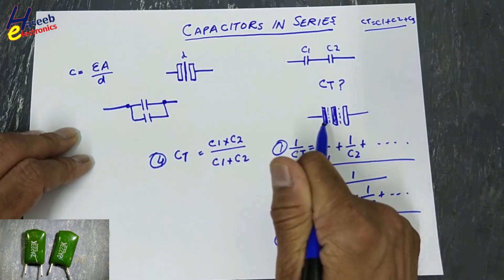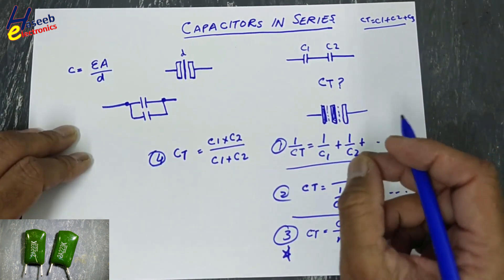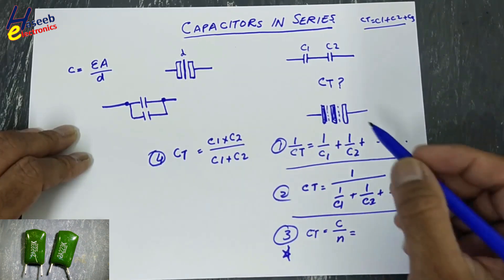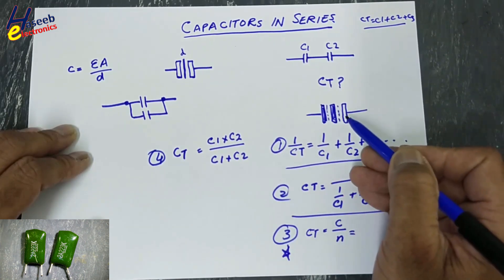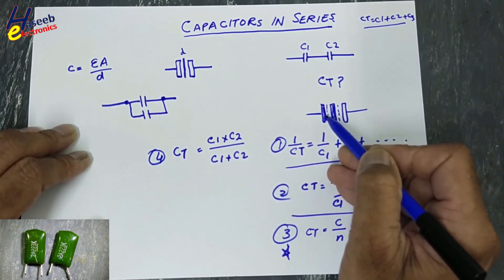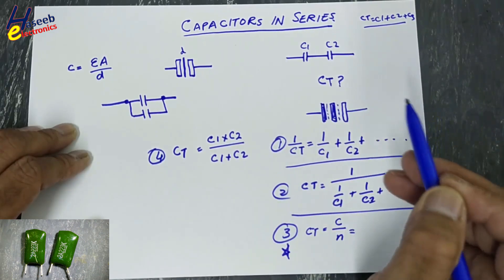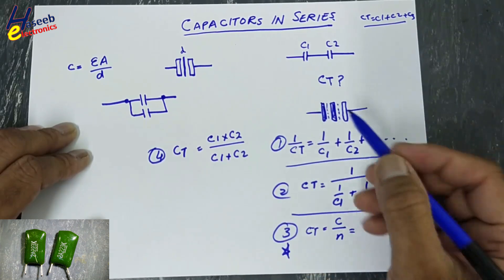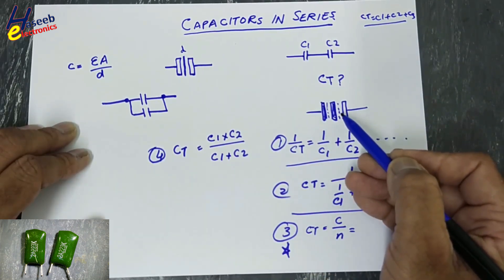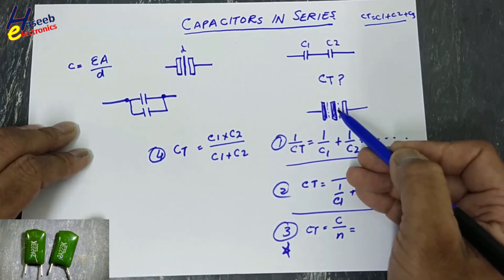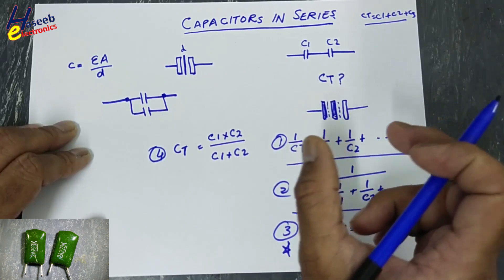However, we cannot connect a 100V and a 50V capacitor in series effectively — the lowest voltage rating must be considered. If one capacitor is 50V and the second is 100V, both will be treated as 50V each, because voltage divides equally. If connected to a 200V section, the 100V capacitor works normally but the 50V capacitor will leak and get damaged after 50V. When connecting capacitors in series, the voltage rating must be the same.